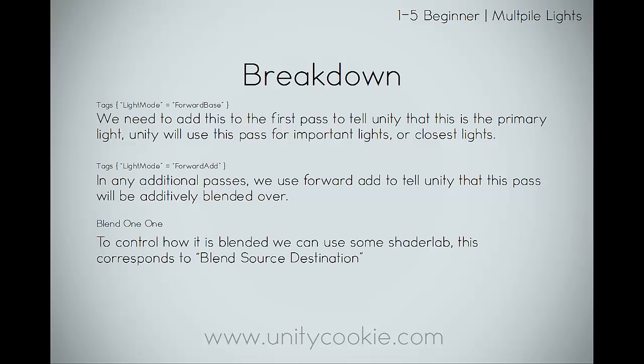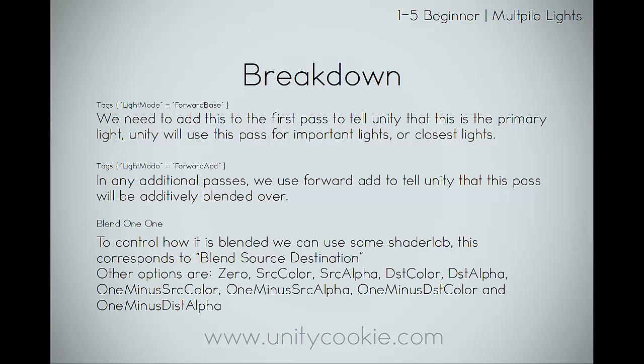Blend 1 1 is a really cool line — this controls how it is blended, and this is using ShaderLab. It corresponds to blend source and destination. 1 means we're going to blend this straight over the top — we're just going to add it together. There are a whole bunch of other options: 0 means don't include the source color; you can also blend based on source color, source alpha, destination color, destination alpha, 1 minus source color, 1 minus source alpha, 1 minus destination color, and 1 minus destination alpha. Basically the name describes what it does.